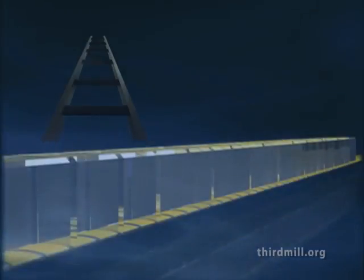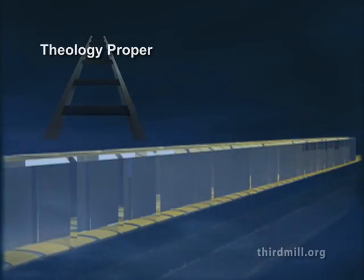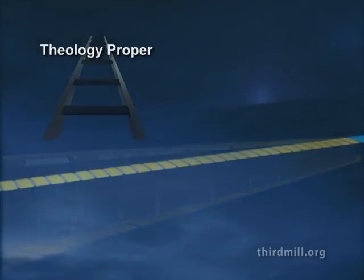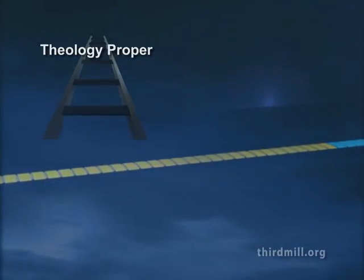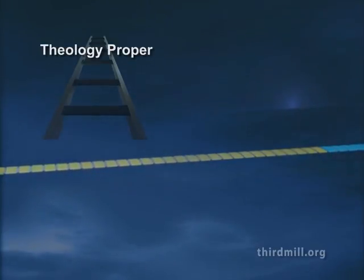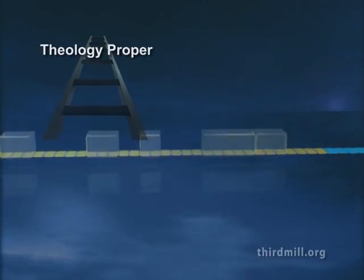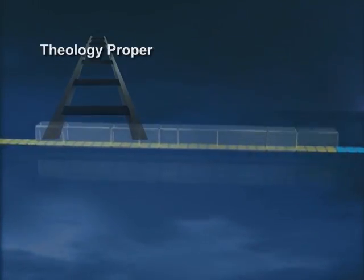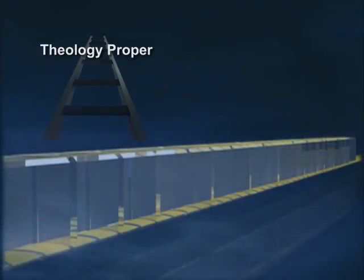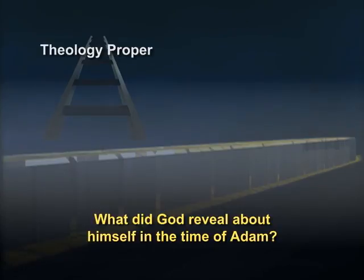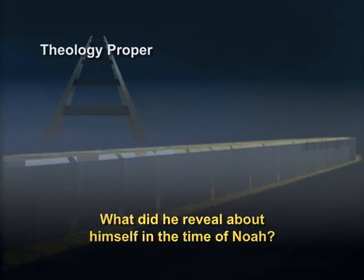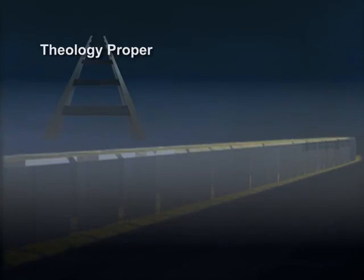For instance, a biblical theologian might explore theology proper. But rather than concentrating on the doctrine of the eternal trinity as in traditional systematics, a biblical theologian would look at the distinctive act and word revelations about God during different periods of the Old Testament, always being careful not to violate later revelation, but also careful not to read later revelation into earlier periods. A biblical theologian might ask, what did God reveal about himself in the time of Adam? What did he reveal about himself in the time of Noah? What was Moses' doctrine of God? And so on. As God acted and spoke in history, he revealed more of himself. For this reason, the doctrine of God developed along certain lines in Old Testament history.